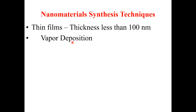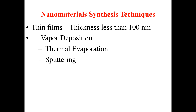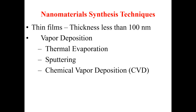In vapor depositions, we mainly have three major techniques. The first we call thermal evaporation, the second is sputtering, and the third we call chemical vapor deposition. So we have three main techniques in vapor depositions for the deposition of thin film — that is nanomaterial in the form of thin film.